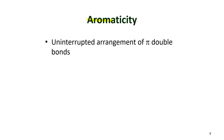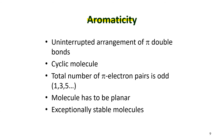Aromaticity refers to the characteristics of aromatic compounds. These compounds have: an uninterrupted arrangement of pi double bonds; they are cyclic — closed ring — molecules; the total number of pi electron pairs is always odd (1, 3, 5, 7...); the molecule is always planar, existing in a two-dimensional plane; and all aromatic molecules are exceptionally stable.